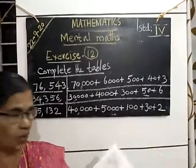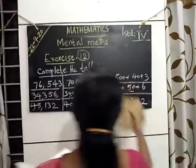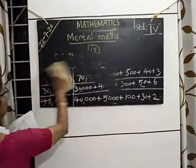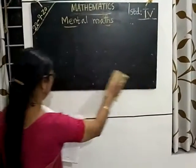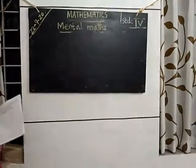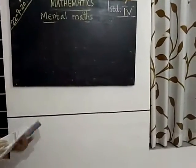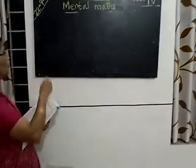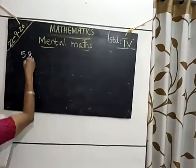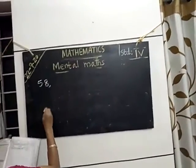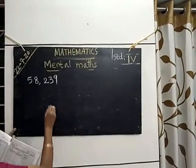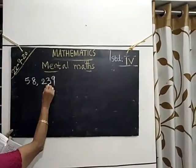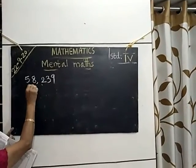Then next one. That is, we have to multiply the numbers. See, one example is even there. 58,239. First of all, you say the digits. 9 ones, 3 tens, 200, 8,000, 5 lakhs.